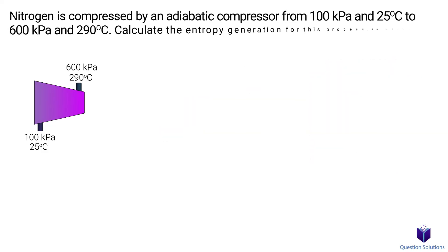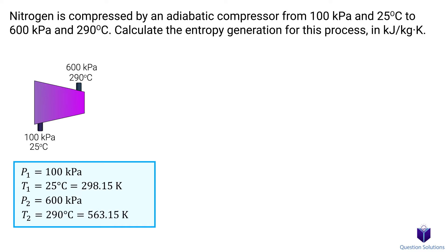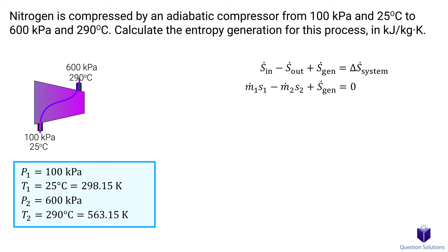Let's take a look at this question, where nitrogen is compressed adiabatically, and we need to figure out the entropy generation per unit mass. The initial pressure of the nitrogen is 100 kPa at 25°C, and the final pressure is 600 kPa at 290°C. We write an entropy balance equation in rate form. Since there is no heat transfer, the only form of entropy transfer is through mass flow — nitrogen entering and leaving, transferring entropy. This is a steady flow system, so the rate of entropy change is zero.